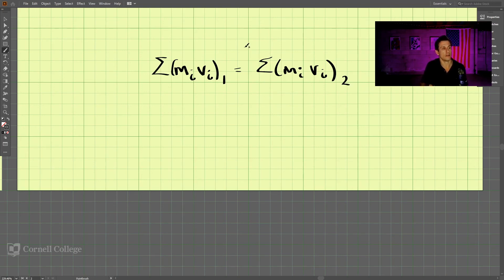But notice here that there are no external forces being applied in between 1 and 2. We're accounting for everything in the mass times the velocity here. So no impulses are in this equation.